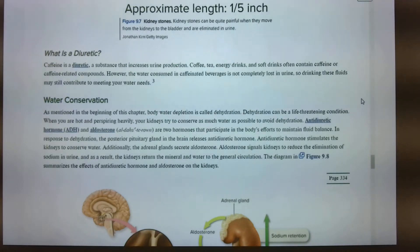So if I'm trying to increase my water intake but I drink eight cups of coffee a day, I should probably drink a lot more water, right? So if I'm trying to increase my water intake but I drink eight cups of coffee a day, I should eat a lot of fruits and vegetables. I did a fair share. Coffee, tea, energy drinks, soft drinks often contain caffeine or caffeine-related compounds. However, the water consumed in caffeinated beverages is not completely lost in urine. So drinking these fluids may still contribute to meeting your water needs.